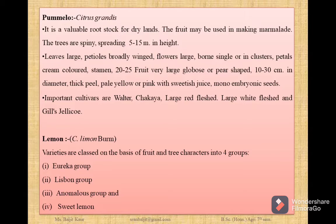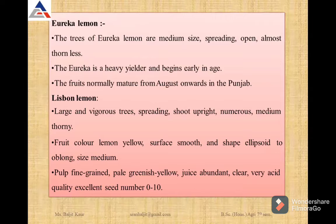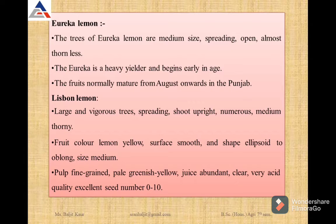The next species of citrus is Lemon (Citrus limon). Varieties of citrus lemon are classed into 4 groups: Eureka group, Lisbon group, Anomalous group, and Sweet lemon. Eureka lemon trees are medium in size, spreading, open, and almost thornless — it is a heavy yielder and fruits normally mature from August onwards in Punjab. Lisbon lemon trees are large and vigorous, fruit color is lemon yellow, pulp is fine-grained and pale greenish yellow, juice is abundant, clear and very acidic, and seed number is 0 to 10.